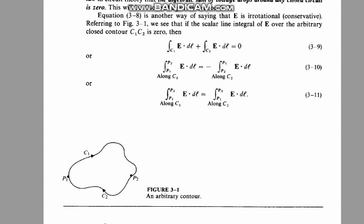There is a closed path drawn in Figure 3.1, an arbitrary contour. If anything starts from there, there are two paths: from P₁ to P₂, there is path C₁, and from P₂ to P₁, there is path C₂.